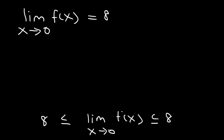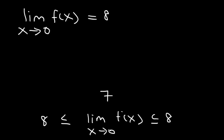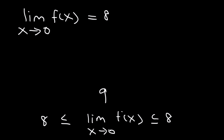That's the only way it could be true. It can't be 7 because even though 7 is less than 8, 7 is not greater than 8. And it can't be 9 because even though 9 is greater than 8, 9 is not less than 8. The only way the inequality holds is if we have 8 in the middle, so they're all equal to each other.